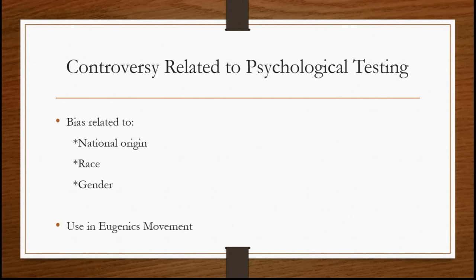One concern is that people of different cultures may think differently about some things, so things that seem obvious coming from one culture may seem different to someone from another culture. One example would be logic: people from European and European-descended backgrounds tend to think of logic in either/or terms — something is either black or it's white. People of other cultures, such as African cultures, may use what's called diunital logic, which suggests that things can be both/and instead of either/or. Europeans tend to use what's called dichotomous logic, whereas people of other cultures may see a more both/and way of understanding things. If a test is based on an either/or concept of reality, that can cause bias in the test.